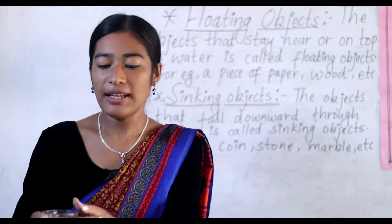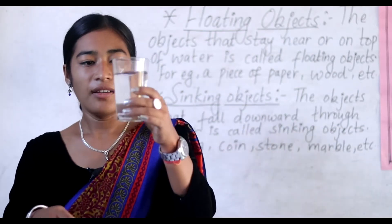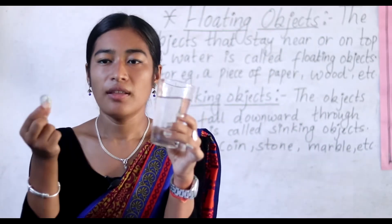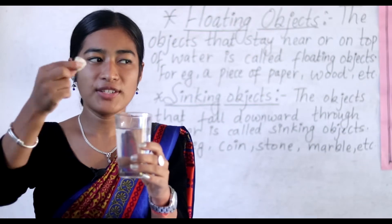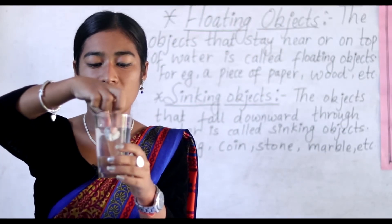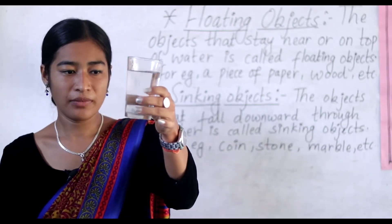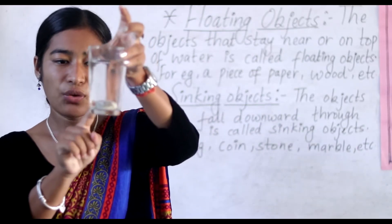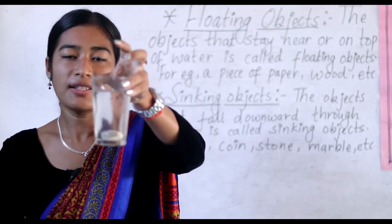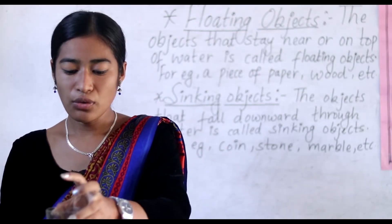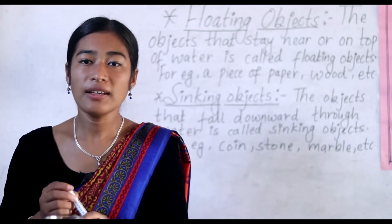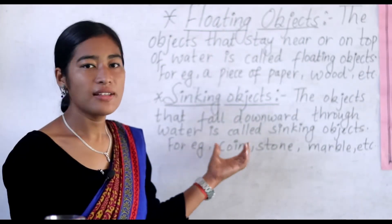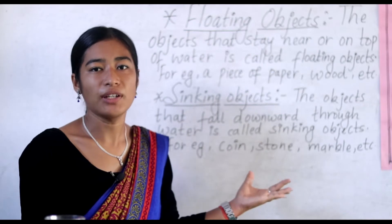Now let's talk about sinking objects. Let's do it practically. Here is a glass of water and I have a stone. Now I will put this stone inside it. What did we see? This stone falls downward through the water.